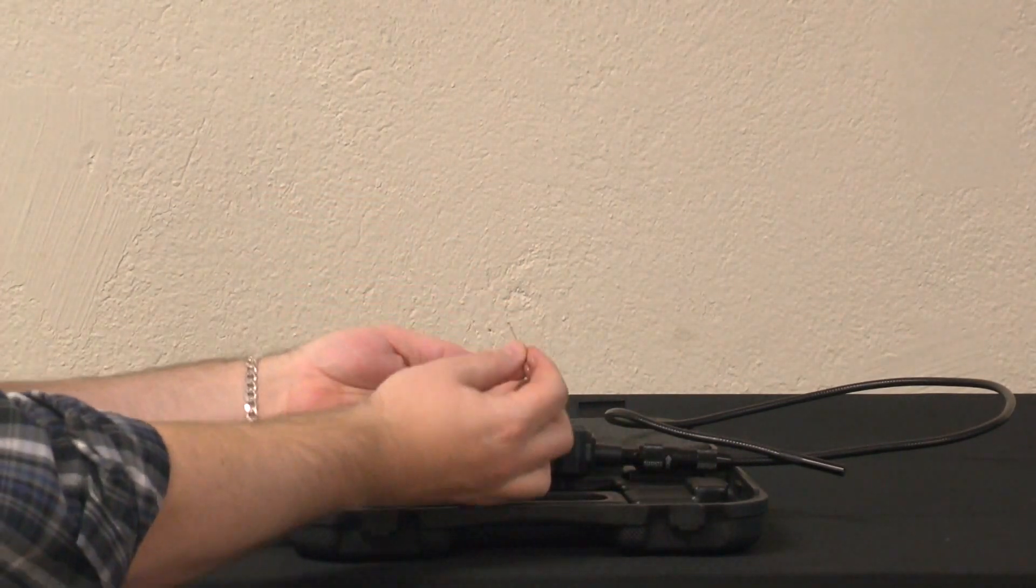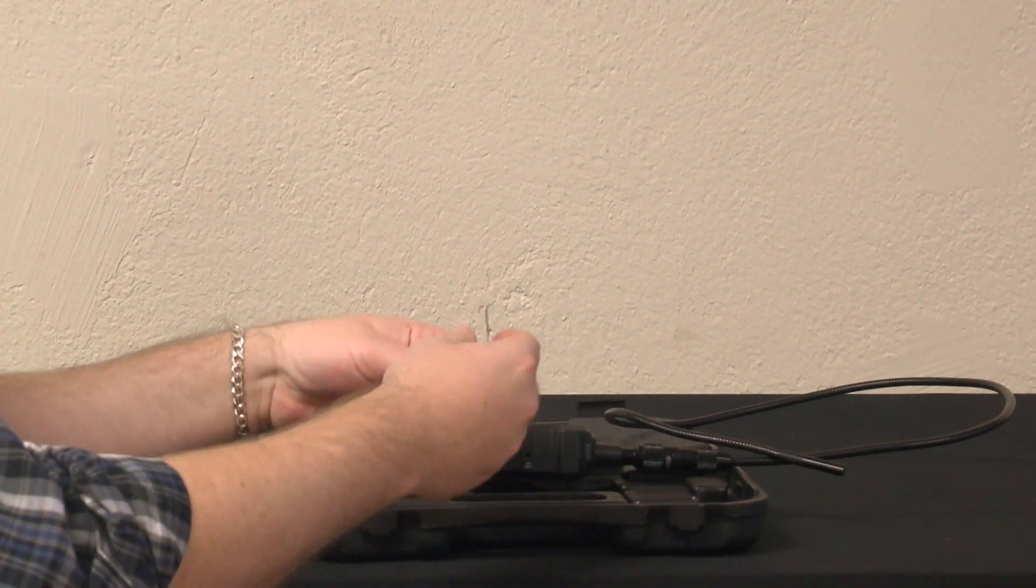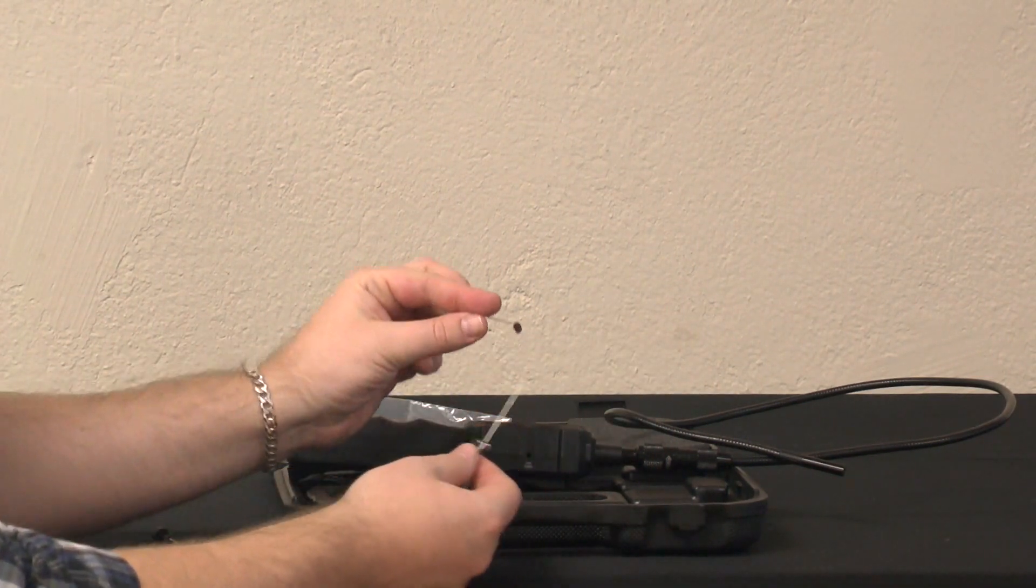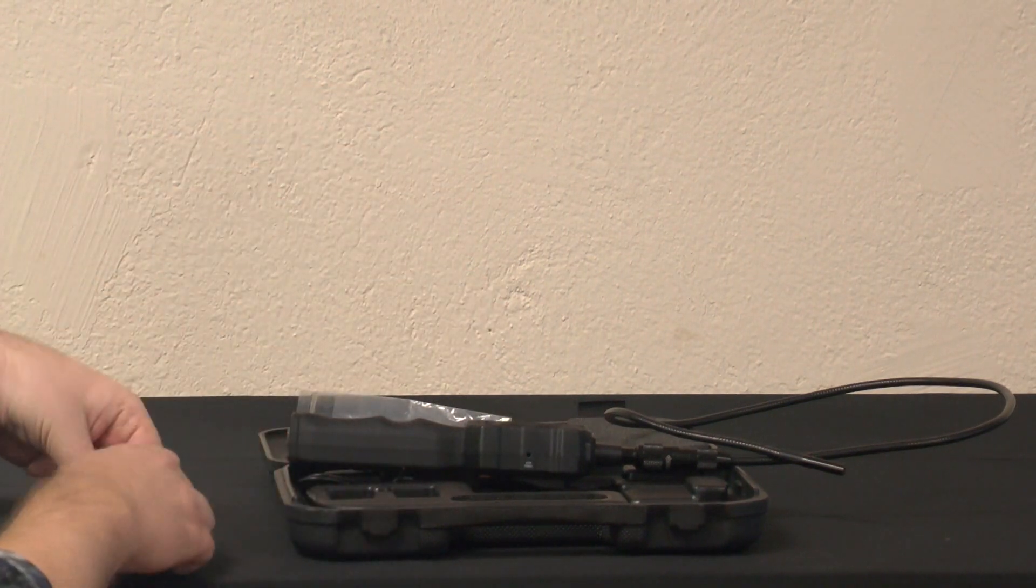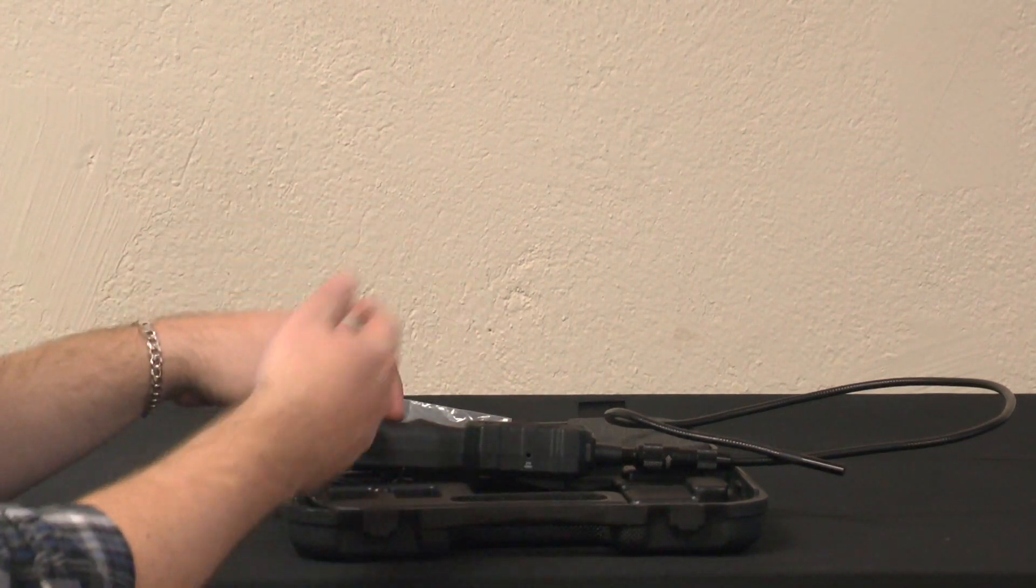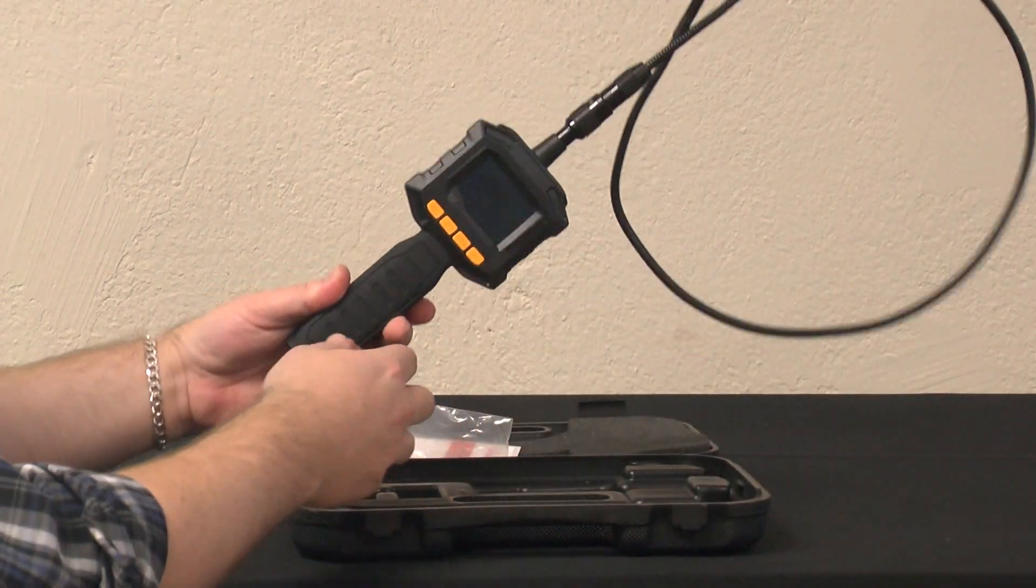You also have a double hook, a single hook, and also a mirror for looking around corners. It also includes two couplers to attach the accessories to the unit itself.